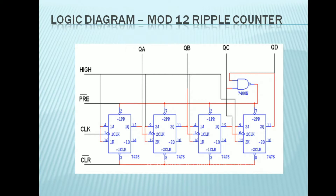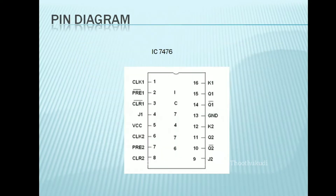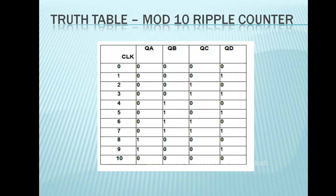In the case of the mod 12 ripple counter, the only difference is that the input to the NAND gate is given from QC and QD. This is the pin diagram of IC 7476. After connecting the circuit as per the logic diagram, we will be verifying the truth table.